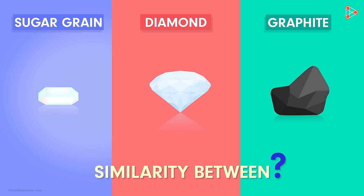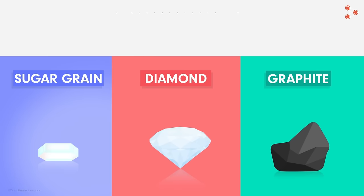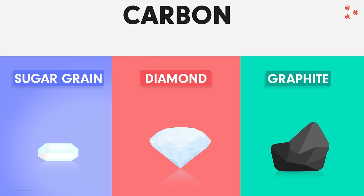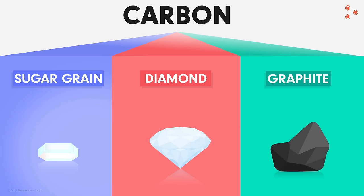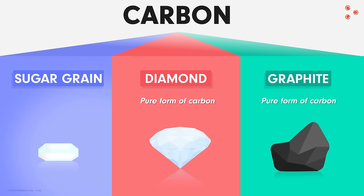There is something common between all these three things. I am referring to the element that these three are made up of — I am referring to carbon. Are we saying that sugar, the radiant diamond, and graphite are all made up of carbon? Absolutely. In fact, diamond and graphite are almost pure forms of carbon, majorly made up of carbon with a few minuscule elements that come as impurities.